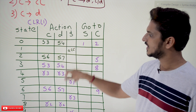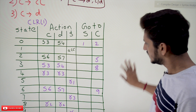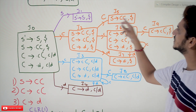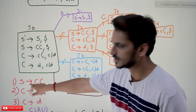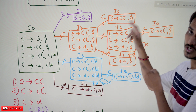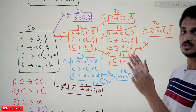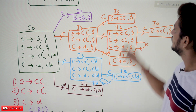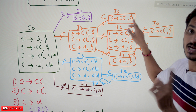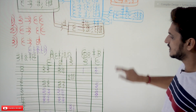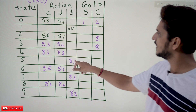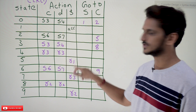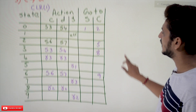For state i5: S tends to CC dot — dot is at the end, this is the first production, so it is reduced to the first production. For which lookahead symbols? Only at dollar. So we write reduce to production 1 only at dollar.